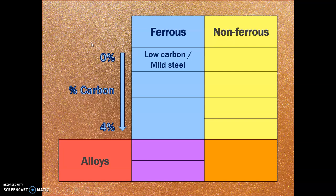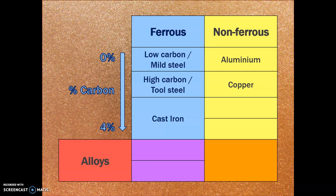I've categorized the ferrous metals by their percentage of carbon. The first is low carbon, also known as mild steel — you need to know both names as they're used interchangeably. We also have high carbon, also known as tool steel, and the one with the highest carbon percentage is cast iron. Our non-ferrous metals are listed alphabetically: aluminium, copper, tin, and zinc. For alloys, our ferrous alloys are high speed steel and stainless steel, and our non-ferrous alloy is brass.